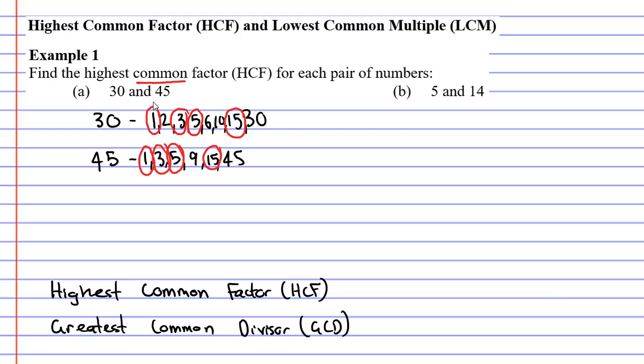Now, if you just use a bit of common sense here, it is asking you to find the highest common factor and the highest common factor we can see is the number 15. It is the highest number that we have circled. So down below we're just going to write the shorthand HCF, meaning the highest common factor is 15.